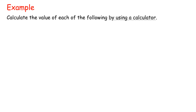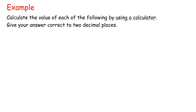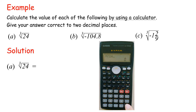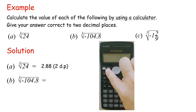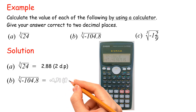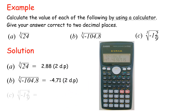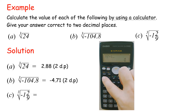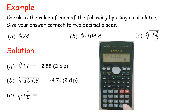Example: Calculate the value of each of the following by using a calculator. Give your answer correct to two decimal places. Solution A: Cube root of 24 equals 2.88. B: Cube root of negative 104.8 equals negative 4.71. C: Cube root of negative 1 and 2 ninths equals negative 1.07.